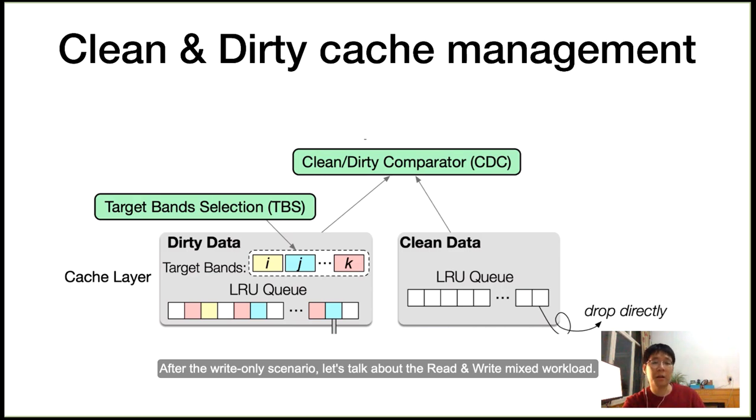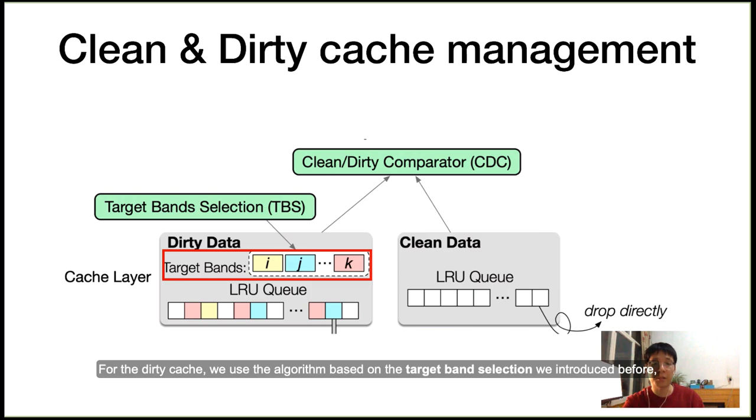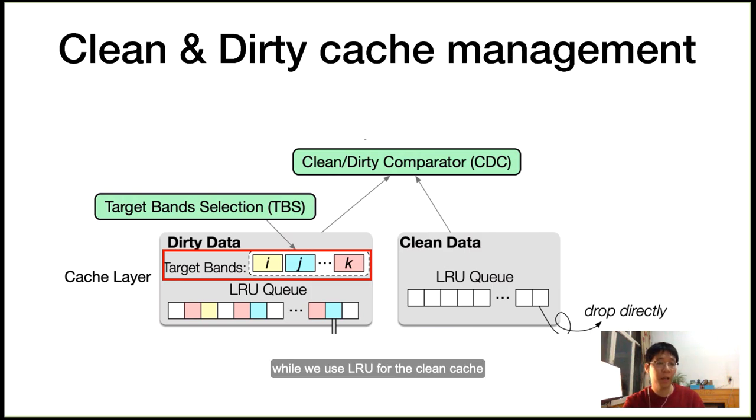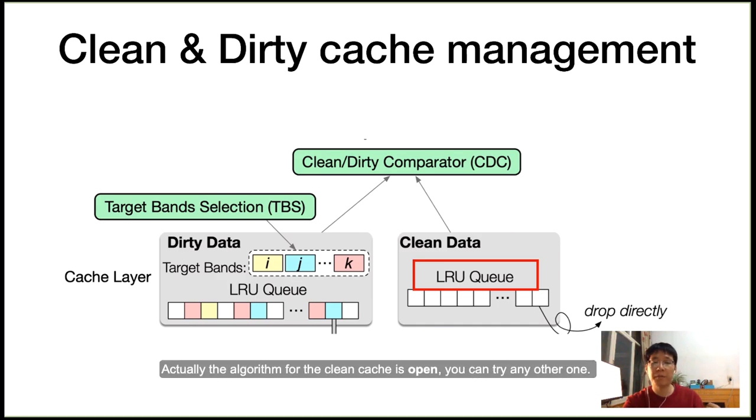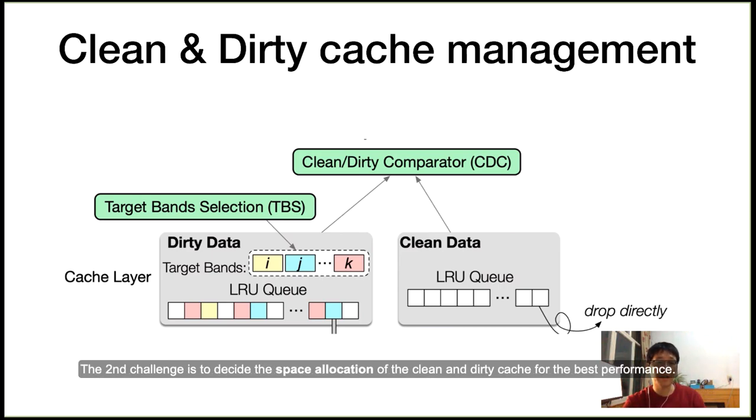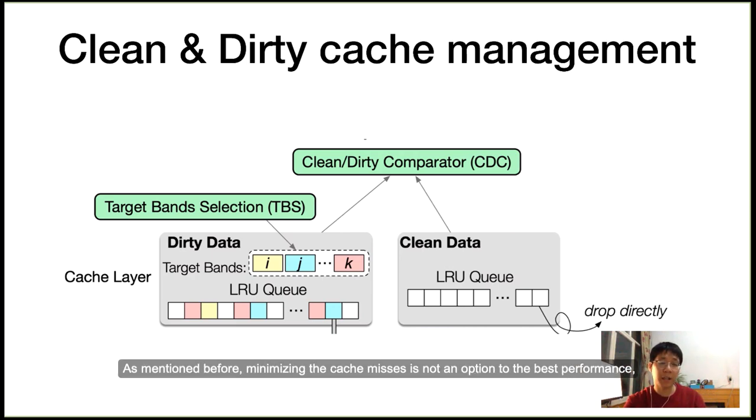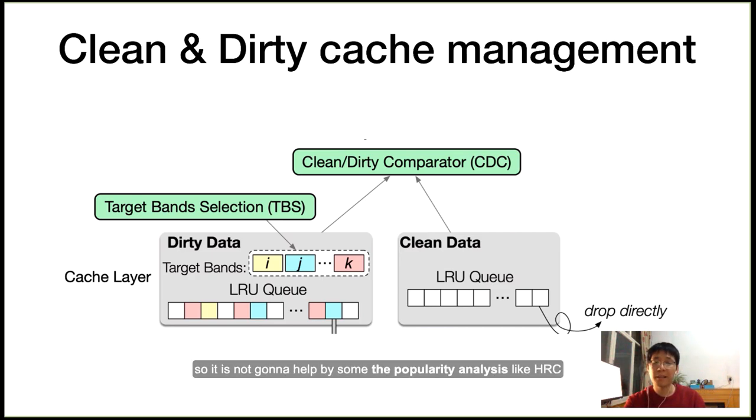After write-only scenario, let's talk about the read and write-mix workload. We separate the clean and dirty cache with different algorithms. For dirty cache, we use the algorithm based on target band selection we introduced before, while we use LRU for the clean cache. Actually, the algorithm for clean cache is open; you can try any other. The second challenge is to decide the space allocation for clean and dirty cache for best performance. As we mentioned before, minimizing cache misses is not an option for best performance, so it is not going to help by some popularity analysis like HRC. Therefore, we choose to build a cost model for eviction of clean and dirty cache. Here I explain this briefly.